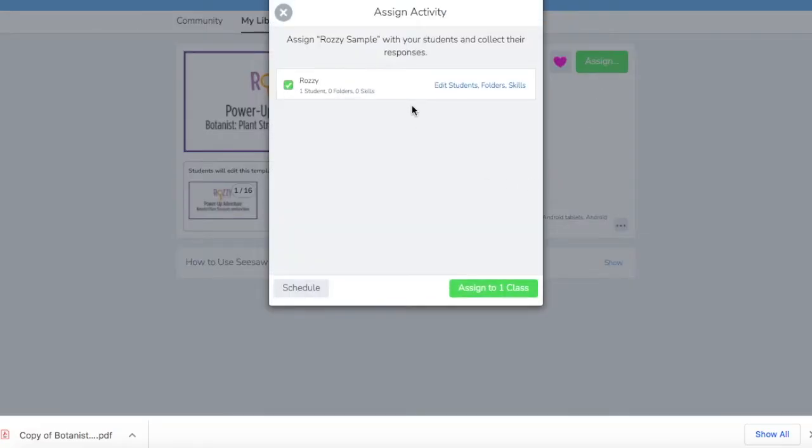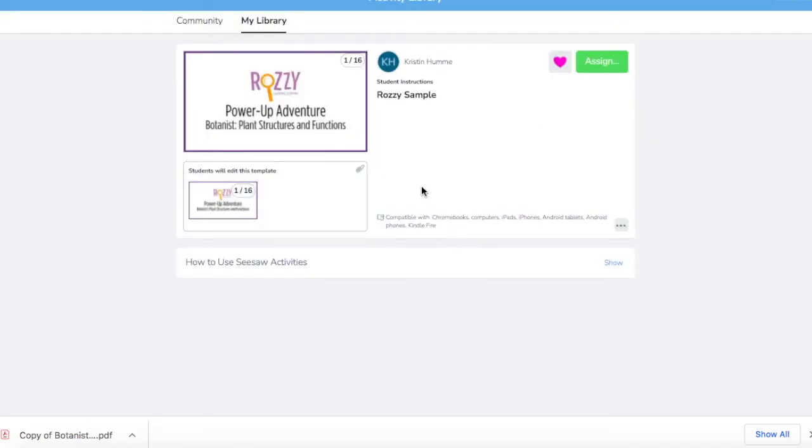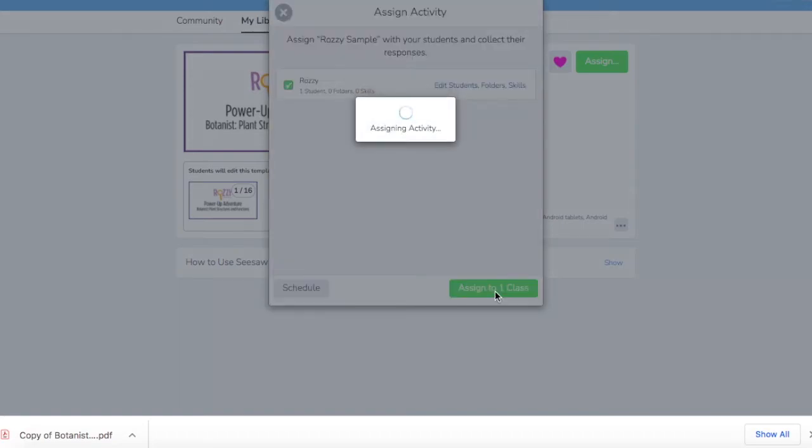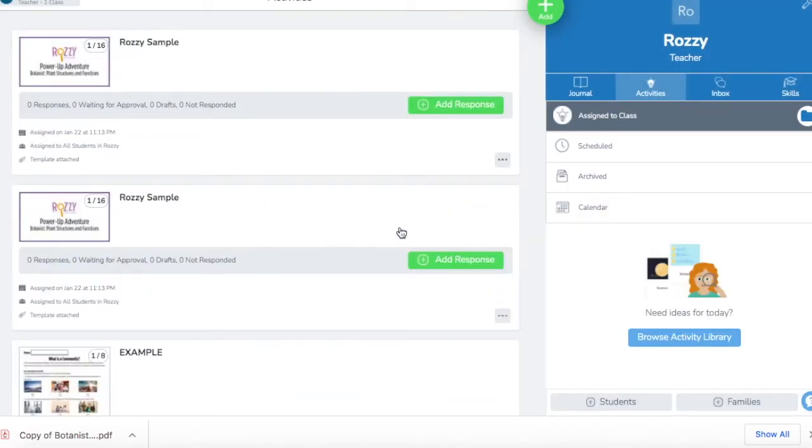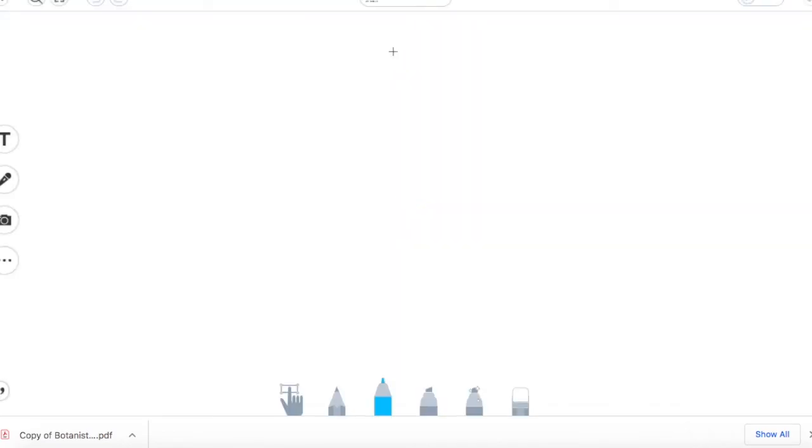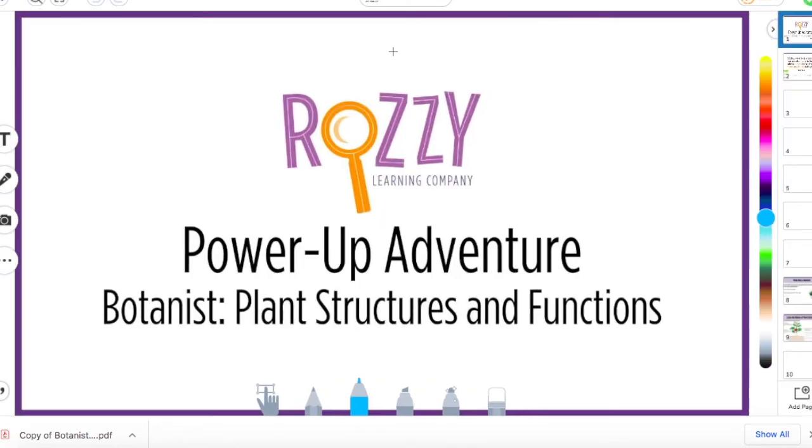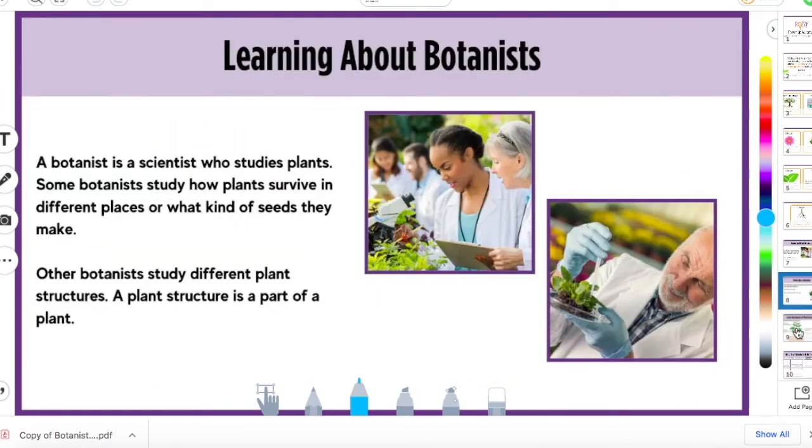And I'm going to assign it to my one student that I have, which is a sample and there it is. So then I am going to view it so we can kind of just go through. So Rossi sample add response. So here we are, let's go to where I put in my little text box.